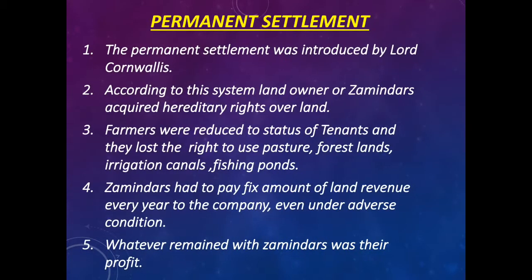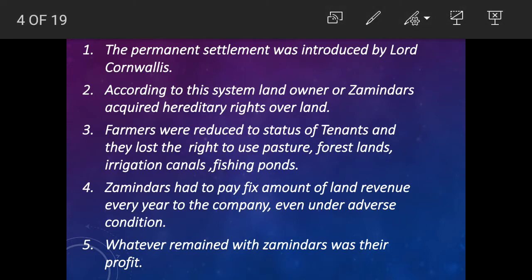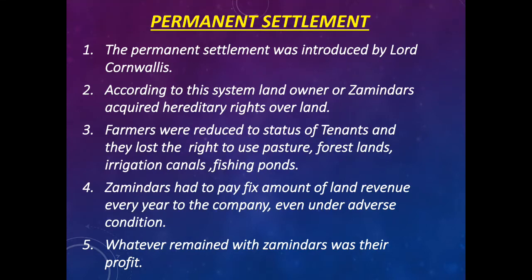The Permanent Settlement was introduced by Lord Cornwallis. According to this system, land owners or zamindars acquired hereditary rights over land. Farmers were reduced to the status of tenants and they lost the right to use pasture, forest lands, irrigation canals, and fishing ponds.